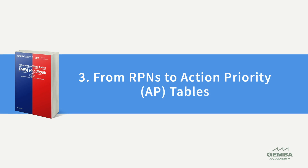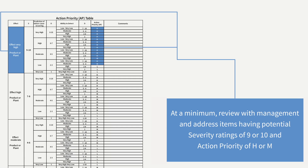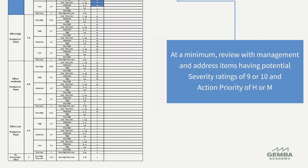The third difference is a shift in emphasis on how we prioritize risks and actions to mitigate risks. Recognizing the limitations and ambiguities of RPN, or risk priority numbers, the AIAG VDA FMEA approach de-emphasizes this in place of a metric called action priority. The action priority tables provide a new way to prioritize actions, placing greater emphasis on severity of the risk.